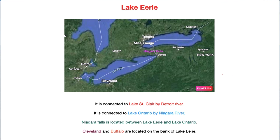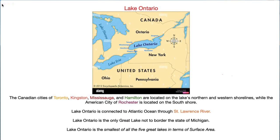The next lake is Lake Ontario. Lake Ontario is on the Canada and USA border. Three important cities in Canada on Lake Ontario are Toronto, Hamilton, and Kingston. On the USA side, one important city is Rochester.